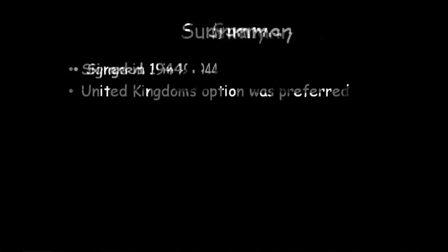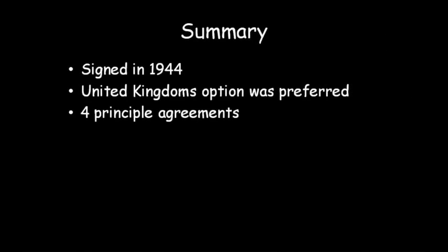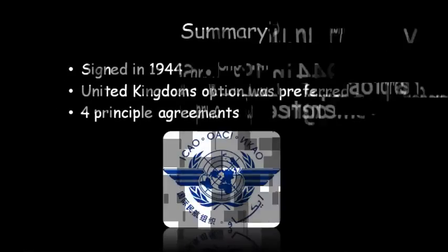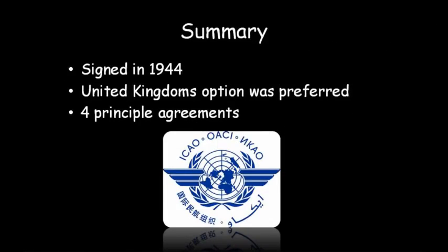To summarise, the convention was signed in 1944, with the United Kingdom's option being preferred out of four proposals, and with four principal agreements, ICAO was formed.